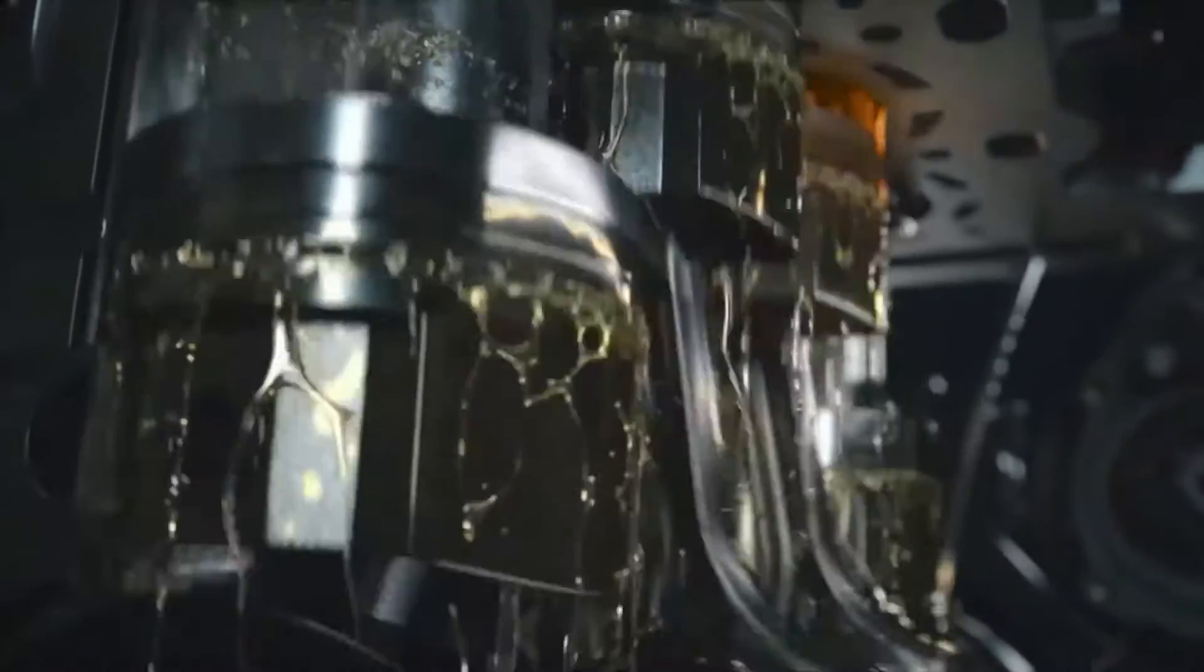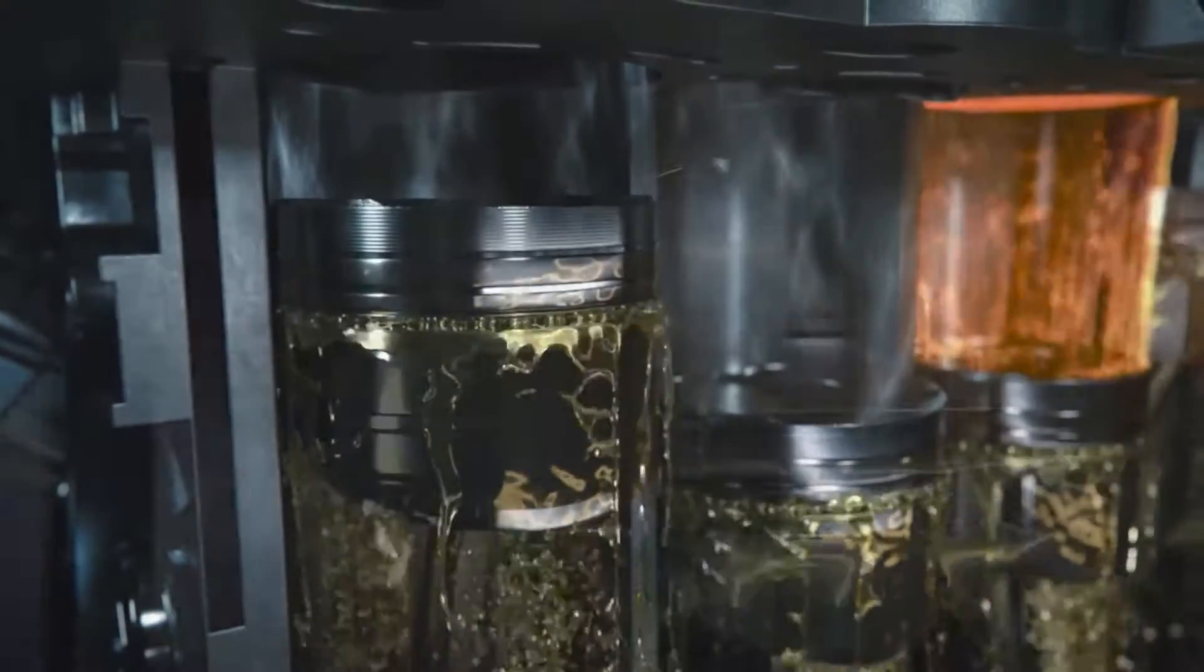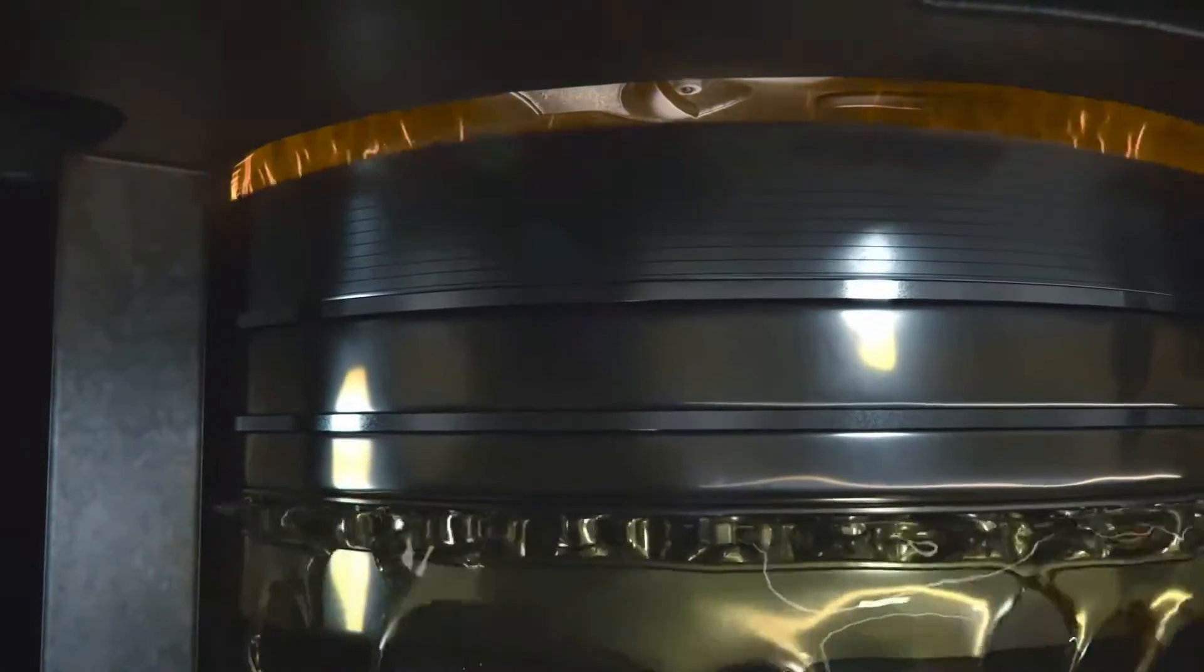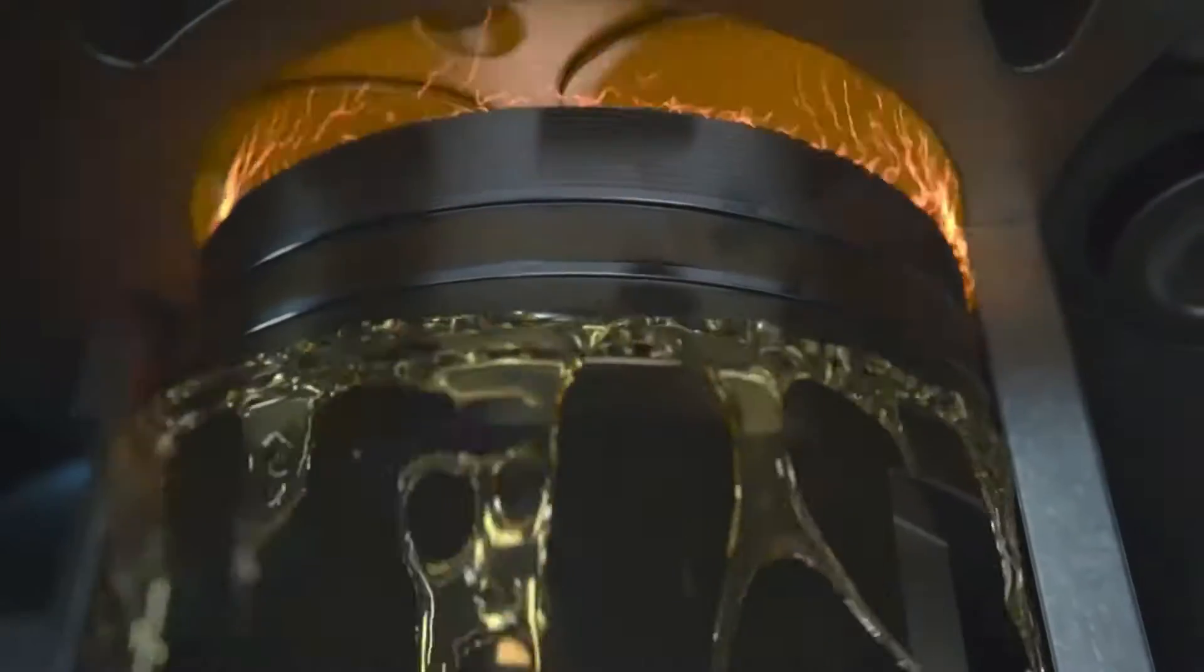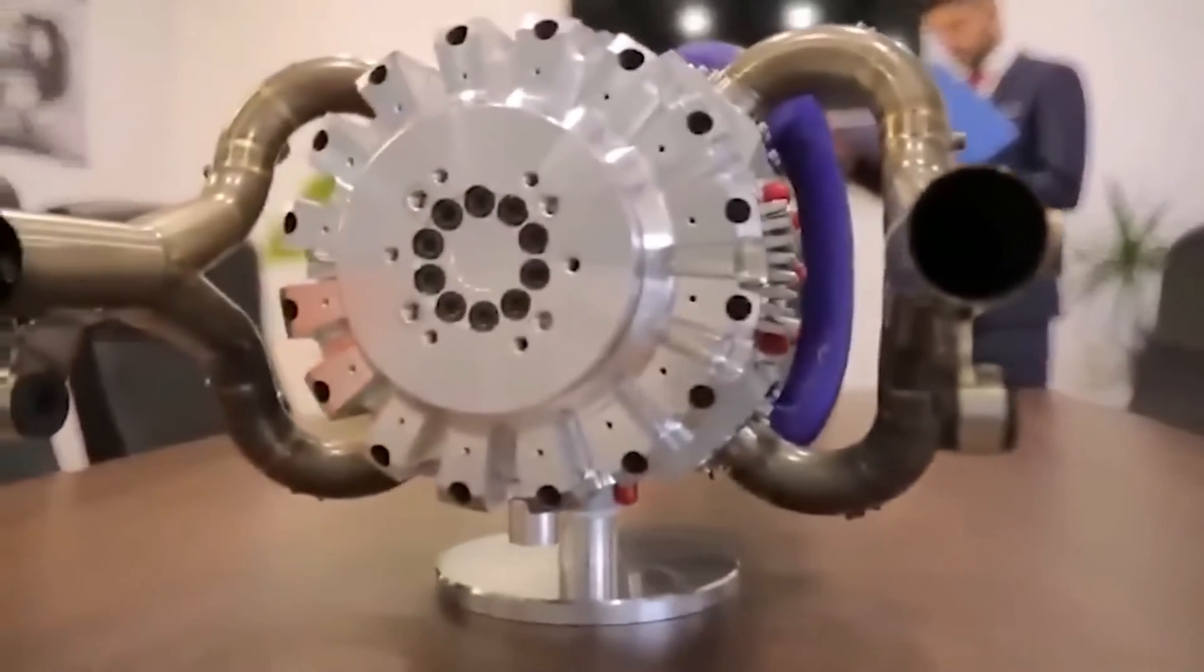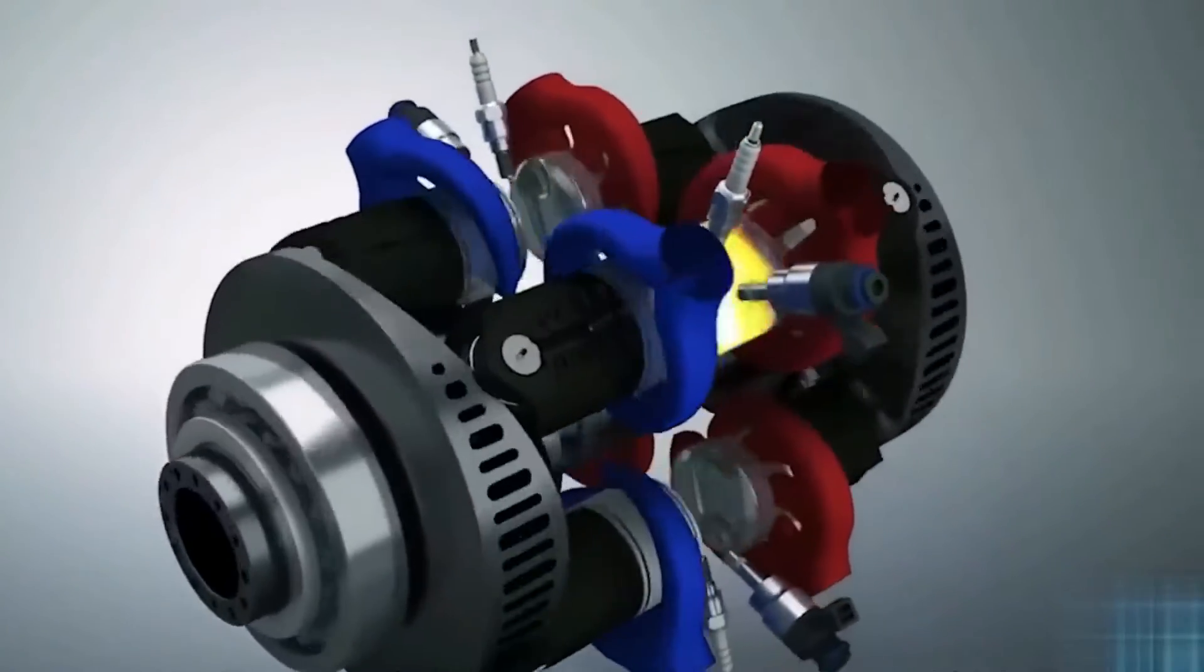Speaking of four-stroke engines, a typical car unit works something like this. Intake comes first, then there's compression, then combustion, and finally exhaust. With the new engine, there's just compression and combustion, while intake and exhaust come at the same time.